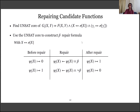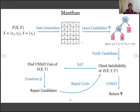Let us see the overall picture of Manthan in one frame. Manthan takes f(x,y) as input, generates data from the satisfying assignments of f(x,y), and learns candidate functions ψ using a decision tree classifier. It verifies whether the candidates are Skolem functions by constructing an error formula and checking its satisfiability. If the error formula is unsatisfiable, it returns the Skolem function ψ. Otherwise, it constructs a formula g over x and y, finds the unsatisfiable core to build a repair formula β, repairs the candidate, and checks the error formula again. This loop continues until the error formula is unsatisfiable.